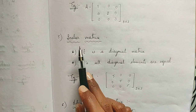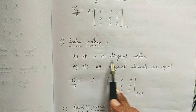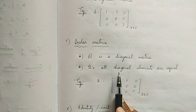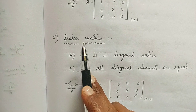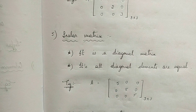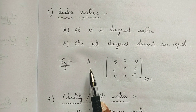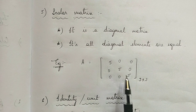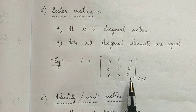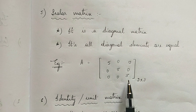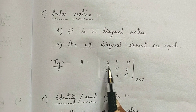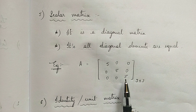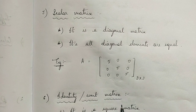Scalar matrix has two conditions: it is a diagonal matrix, and all its diagonal elements are equal. For example, we have a 3 cross 3 matrix where the diagonal elements are all 5, 5, and 5. Another example could have 4, 4, 4 — that also is a scalar matrix, since the diagonal elements are equal and it is a diagonal matrix.